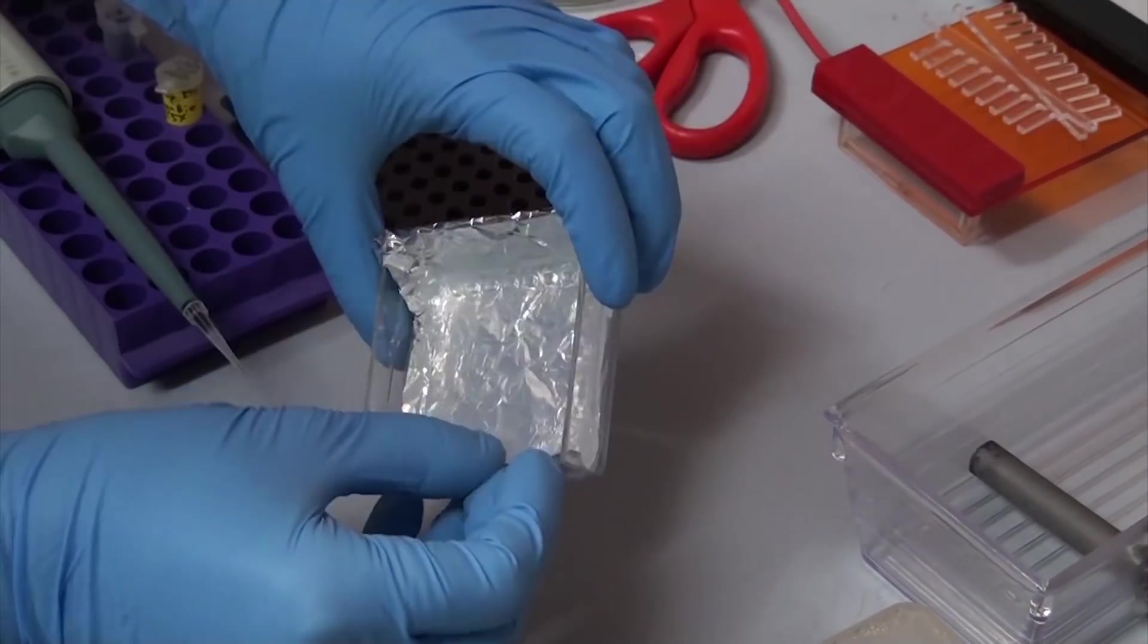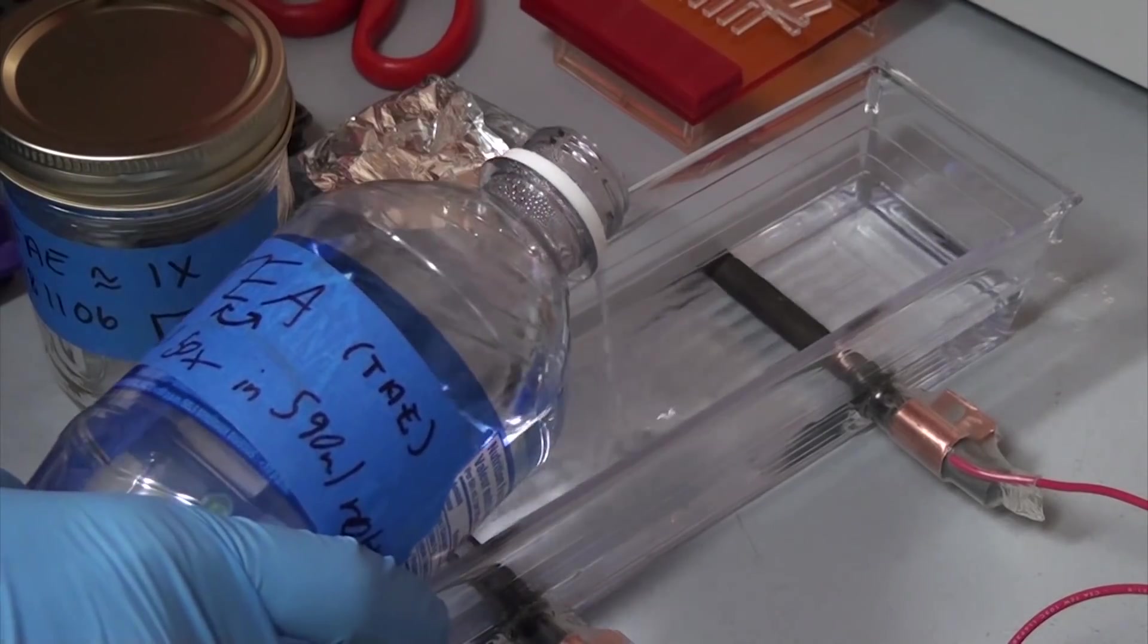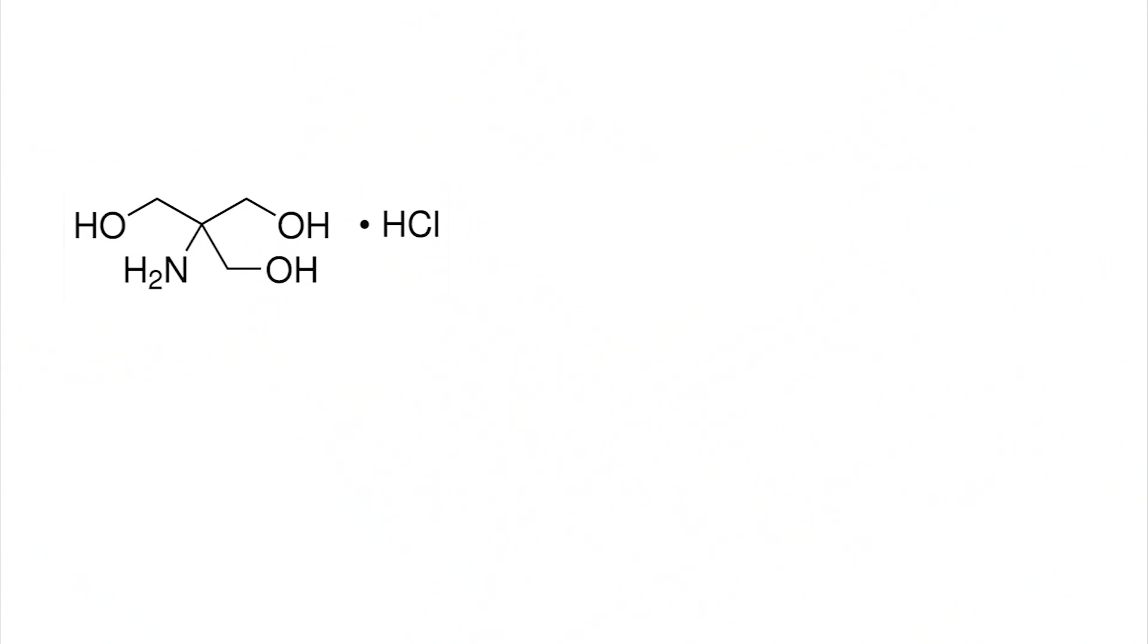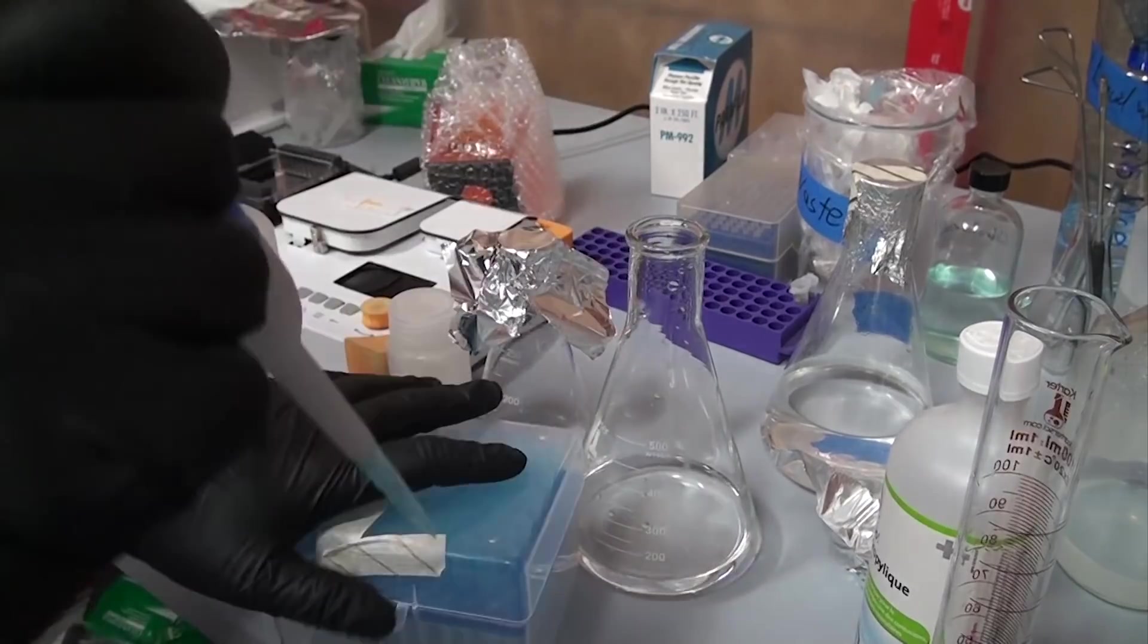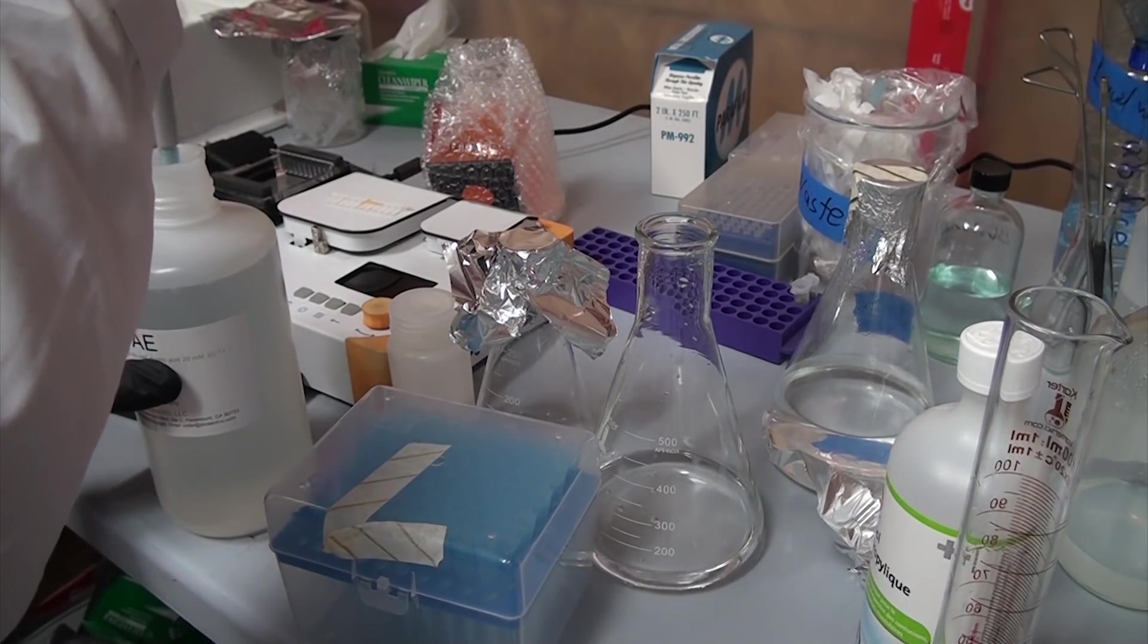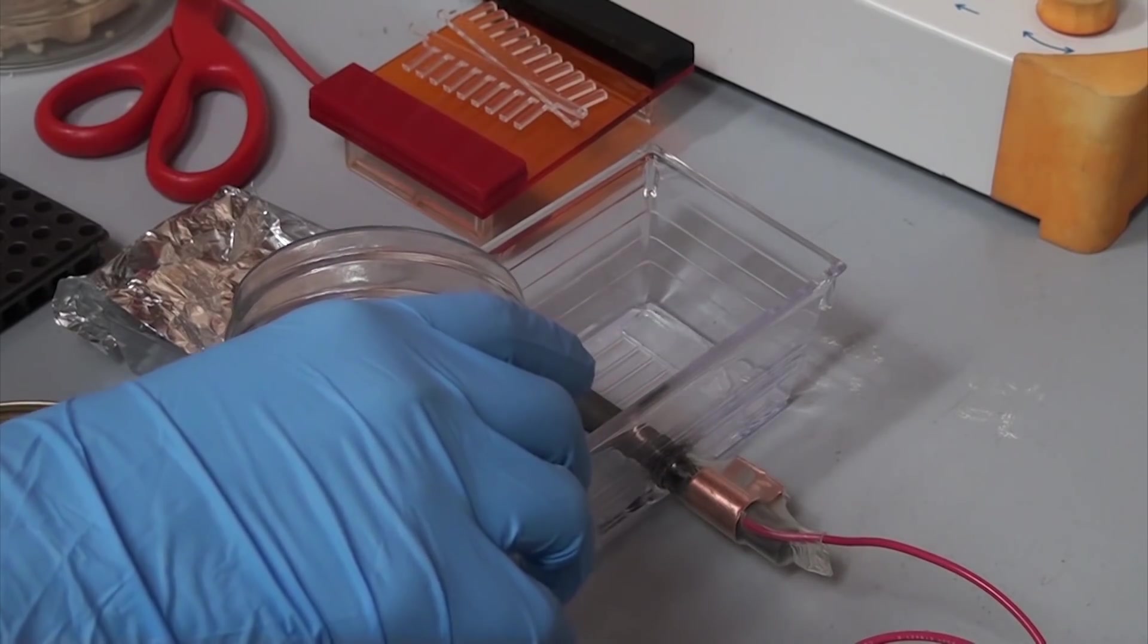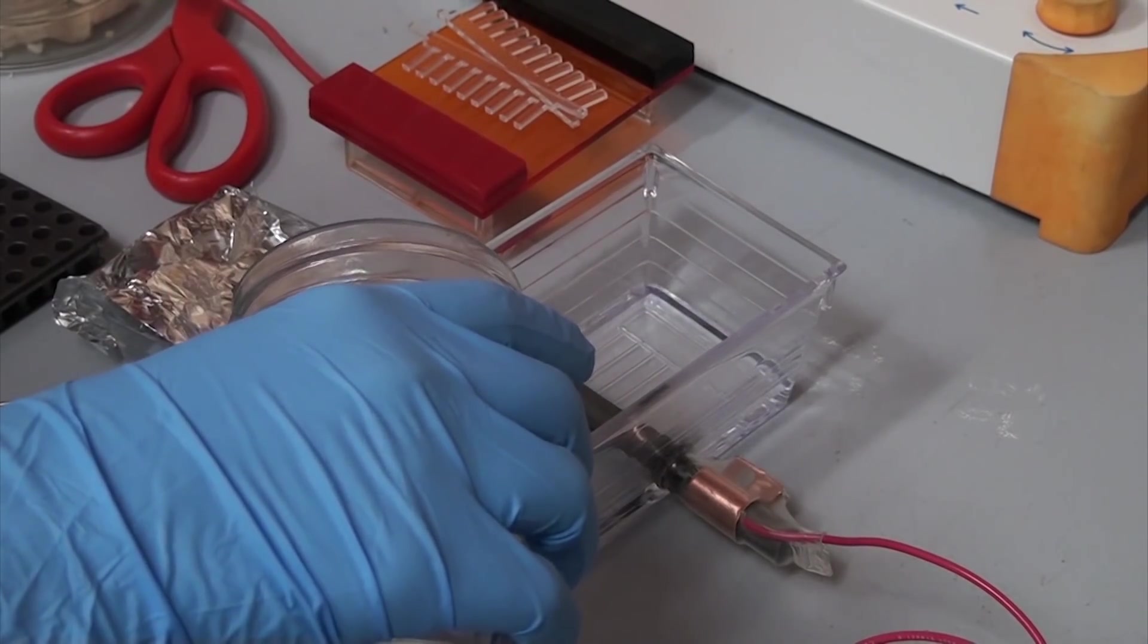Once that's cool, gently remove the comb and transfer the gel to the gel box. Then we fill the box with an electrolyte, in this case we're using TAE solution, which is a mixture of tris hydrochloride, acetic acid, and EDTA. You can mix your own TAE, but I just bought a 50x bottle and diluted it with distilled water. This bottle will last for ages and you can reuse the buffer up to 4 times before it needs to be replaced. Add enough buffer to cover the gel with 3-4mm of liquid and so that the electrodes are covered.